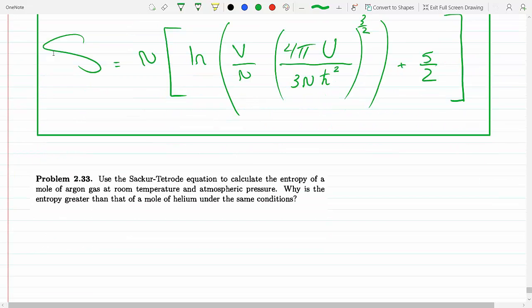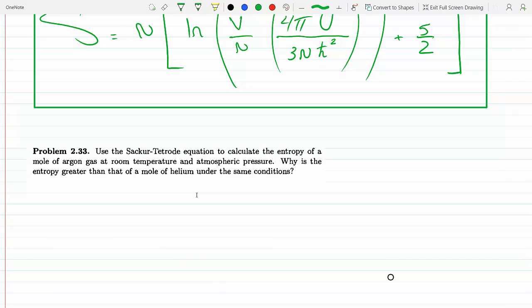As you can see, this is the Tetrode equation. N would be the number of molecules, V will be the volume. I don't have the volume, but I could use the ideal gas law to relate the volume to the pressure and temperature because we are given room temperature and atmospheric pressure.